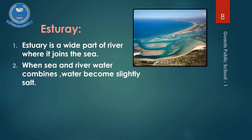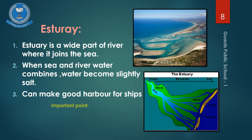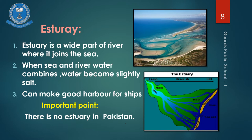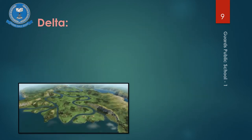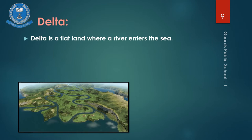An estuary is a wide part of a river where it joins the sea. Where sea water and river water combine, the water becomes slightly salty. Estuaries can make good harbors for ships. An important point to note: there is no estuary in Pakistan. With the help of a picture you will understand estuary easily.